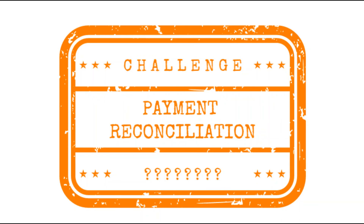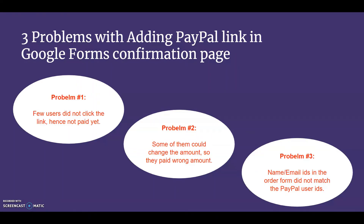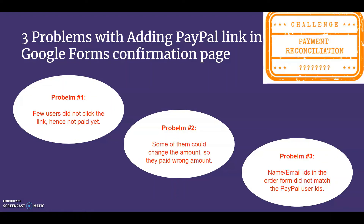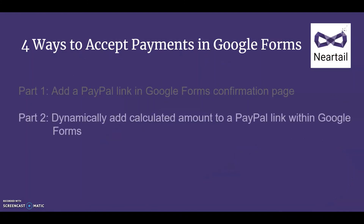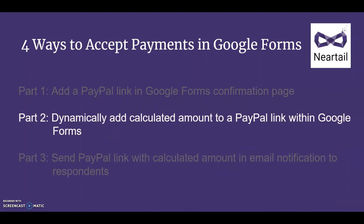While she's happy her business is a success, she's also stressed because of this payment issue — but she's not ready to give up yet. You've seen how Elaine used her PayPal link on the Google Forms confirmation page and how it led to unexpected results. Watch Part 2 of this video series to fully understand how Elaine found the best way to make her users pay before submitting the form, and how she managed to dynamically calculate and include the order total in her PayPal link. See you there!